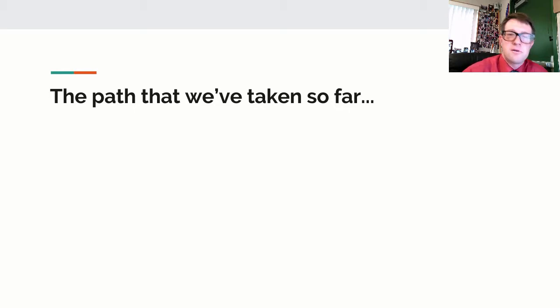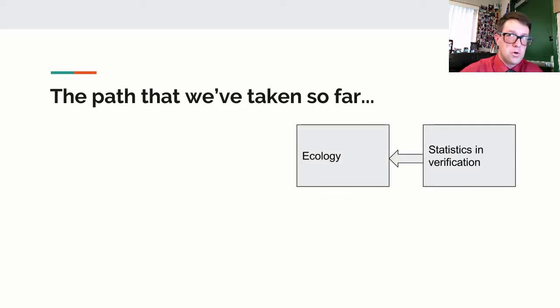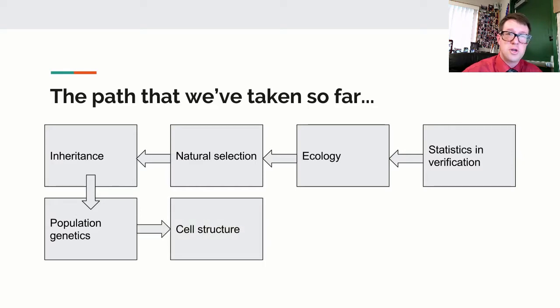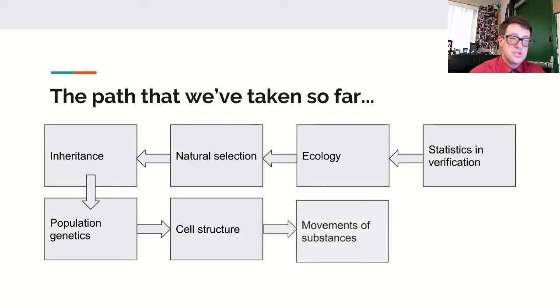Where have we been so far? We started talking about statistics, which led us to dealing with the big world of ecology. Ecology led us to ask questions about natural selection and how we got the organisms that we have, and that requires us to deal with inheritance patterns and reproduction. From there, we can combine natural selection and inheritance patterns and talk about population genetics, which then started to beg the question of can we do a better job of describing ecology, natural selection, inheritance, and population genetics.